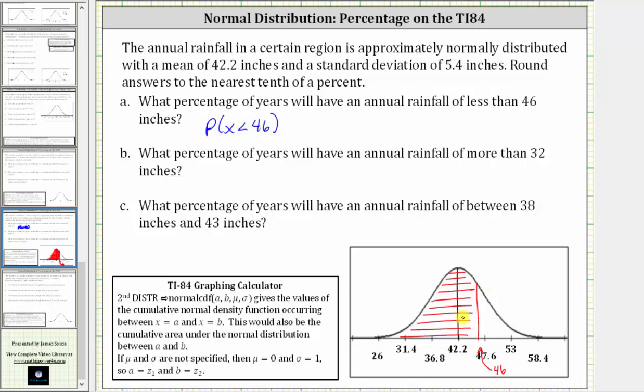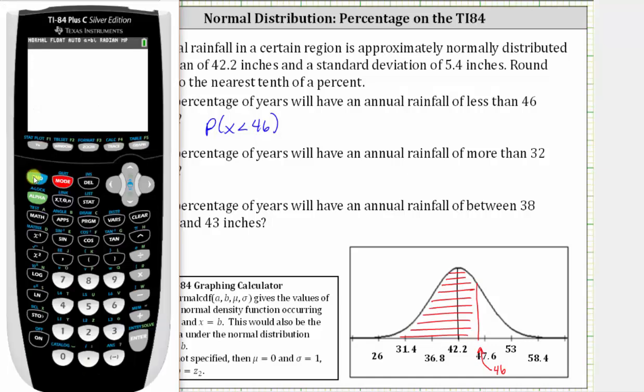And now we'll find this area using the normal cumulative density function on the TI-84. So going to the calculator, we press second vars, number two, for the normal cumulative density function.